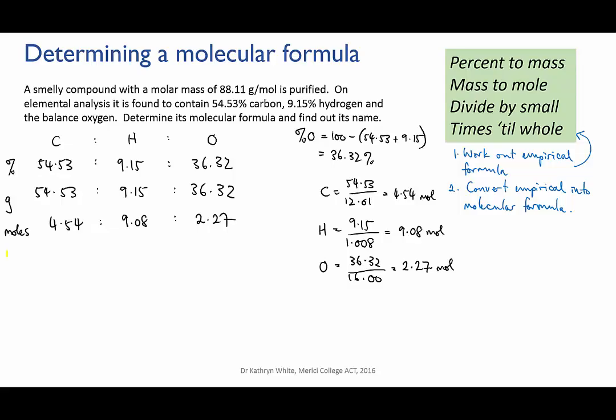Now we divide through by 2.27, which is the smallest of the three numbers, to simplify the ratio, and that gives us 2 to 4 to 1, which is a whole number ratio so it doesn't need any further work. So our empirical formula is C2H4O.